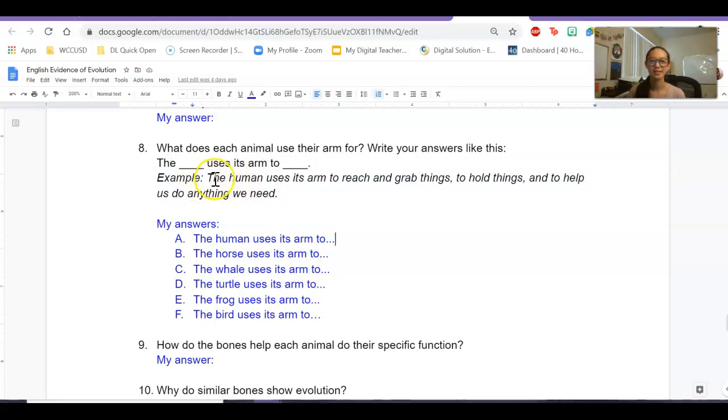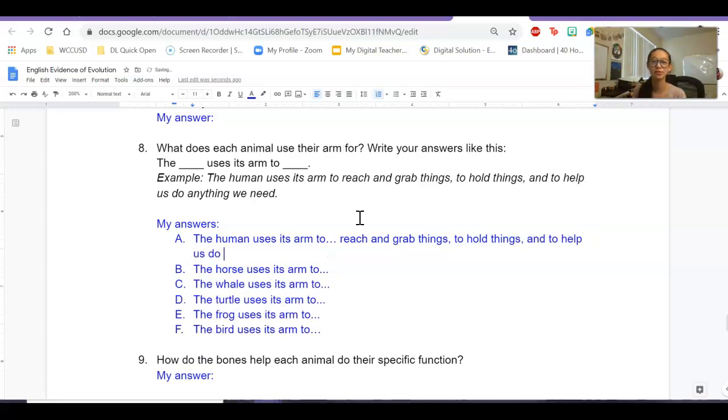So it says, for example, the human uses its arm to reach and grab things, to hold things, and to help us do what we need. So we can use that as our example. The human uses its arm to reach and grab things, to hold things, and to help us do anything we need. What does a horse use its arm for? The horse uses its arm to run fast.